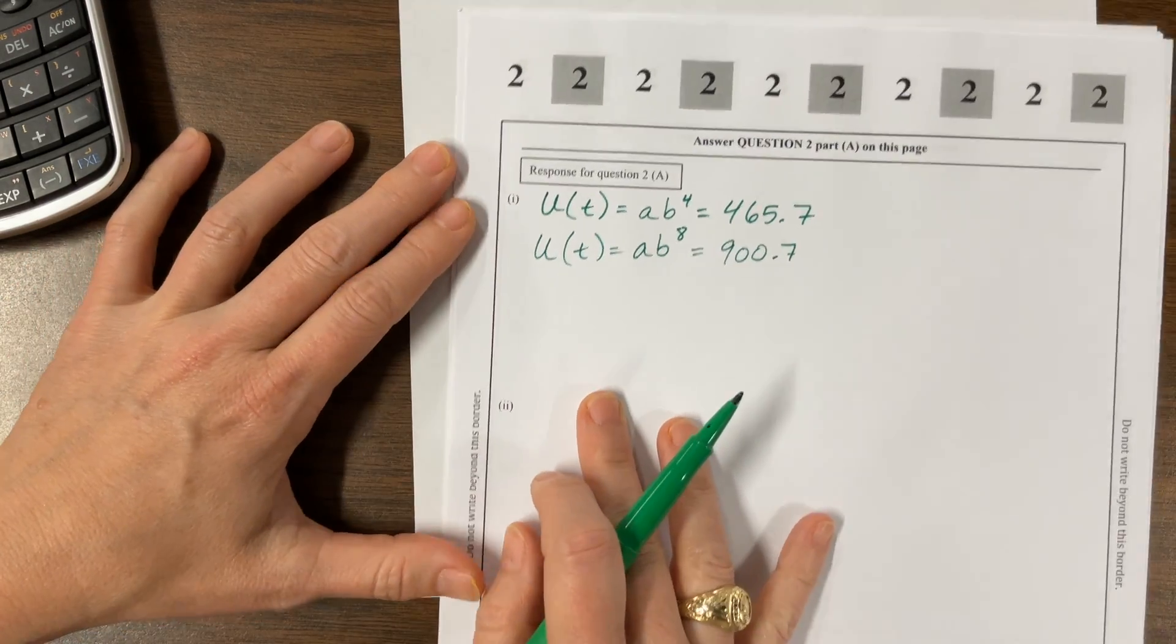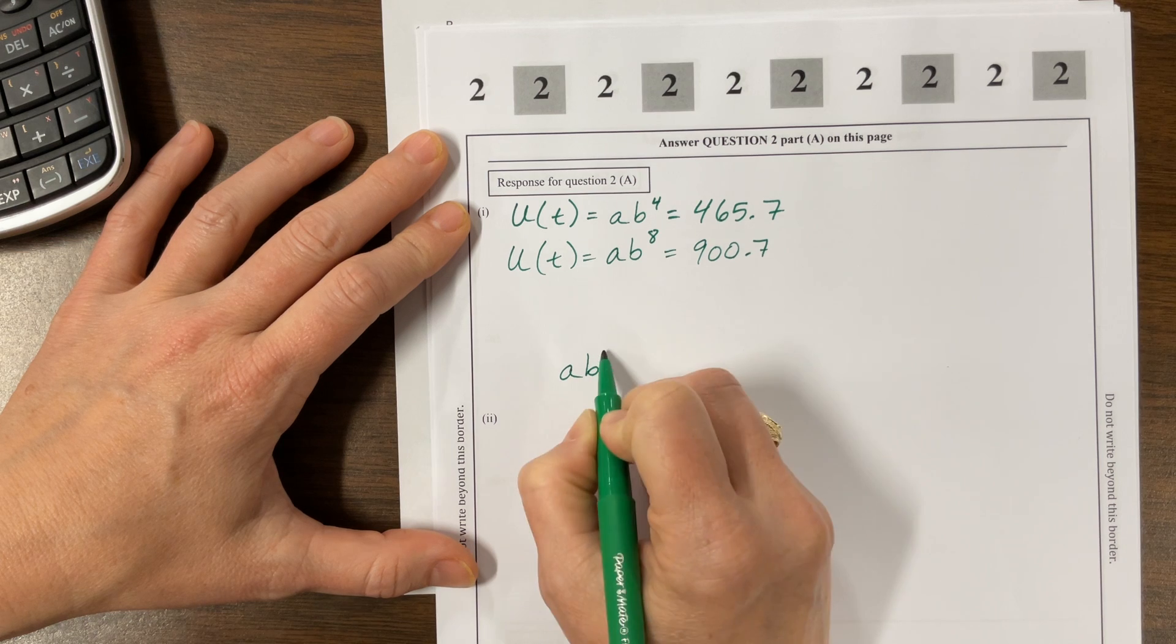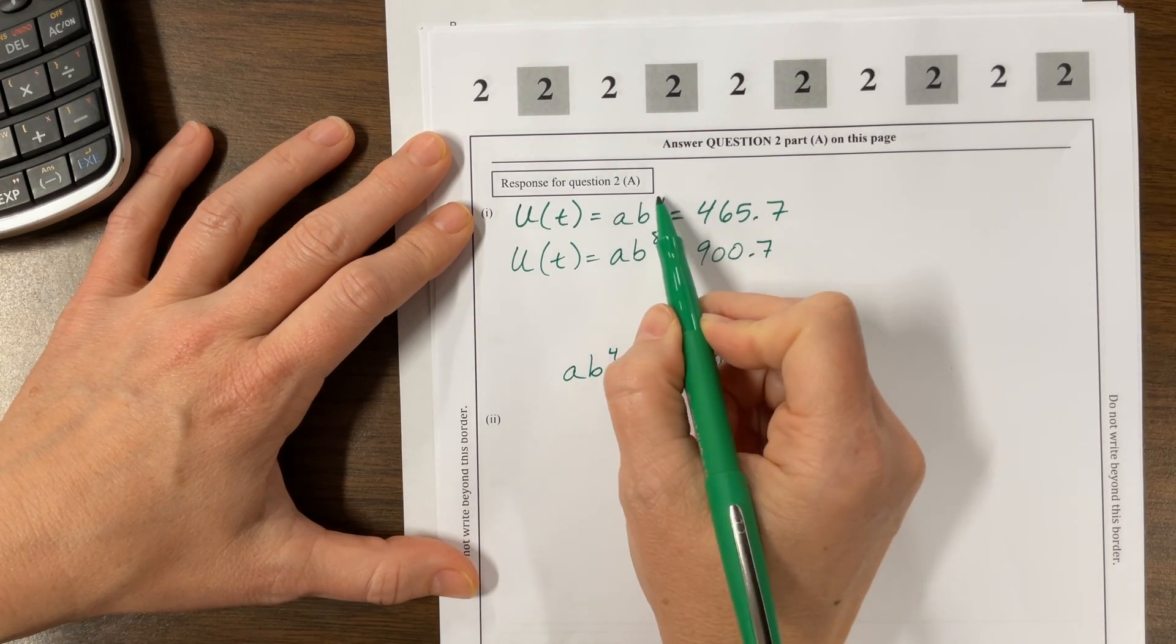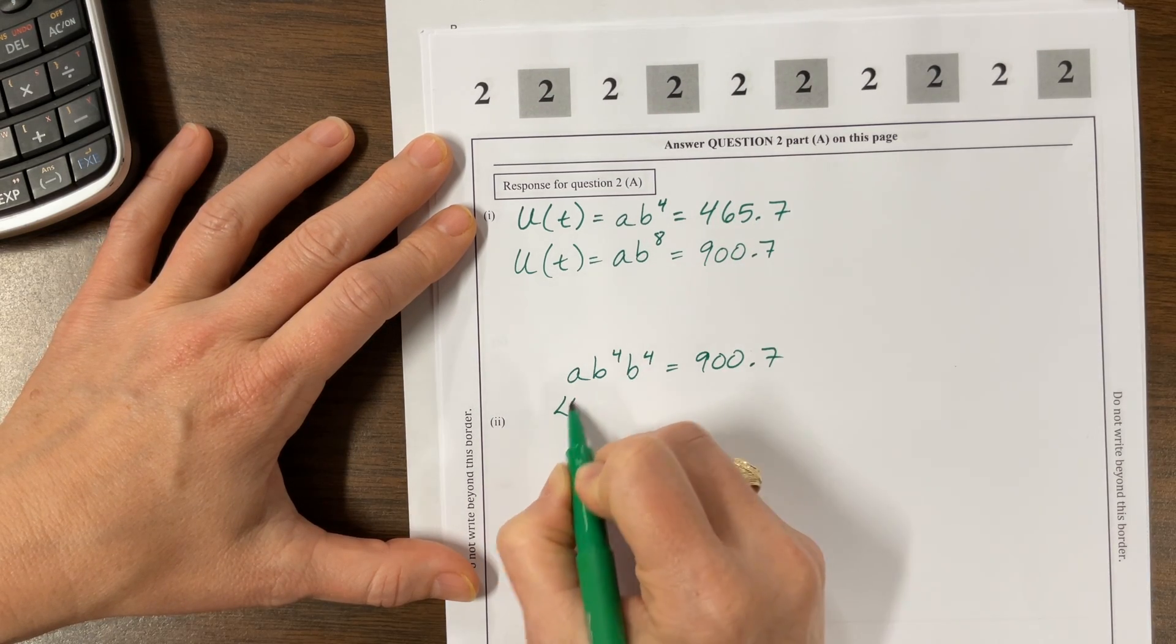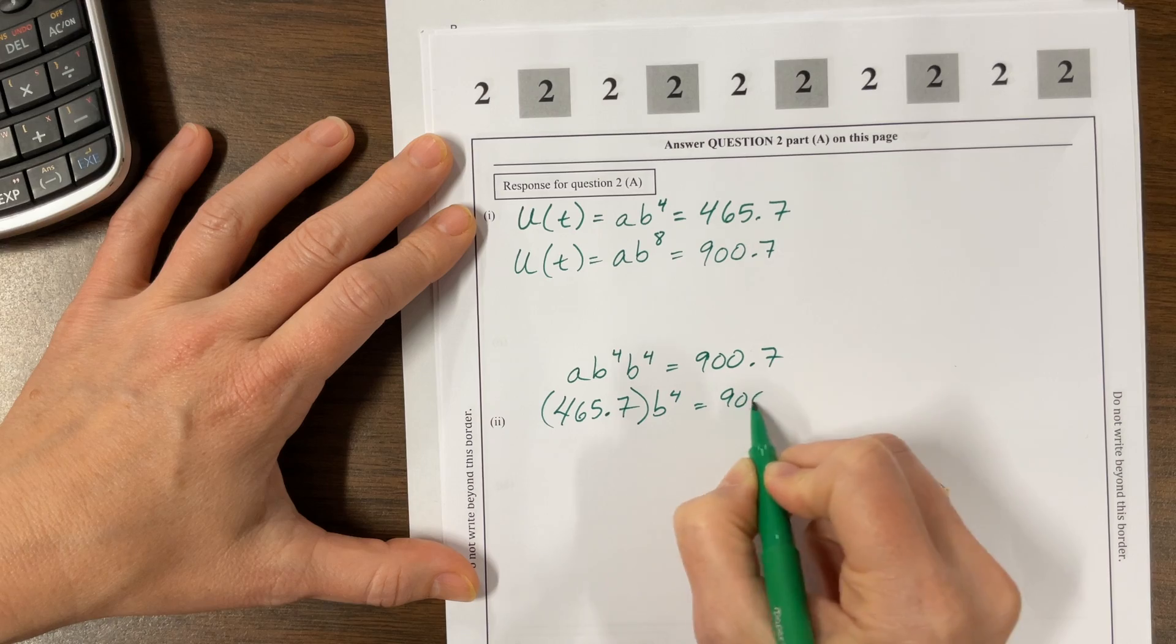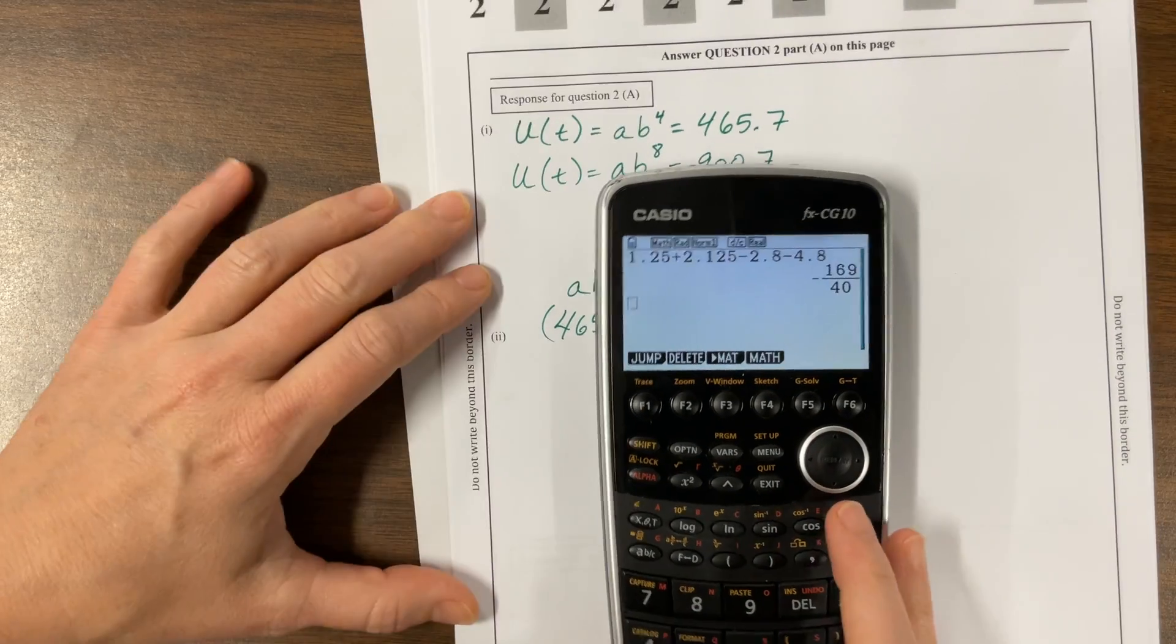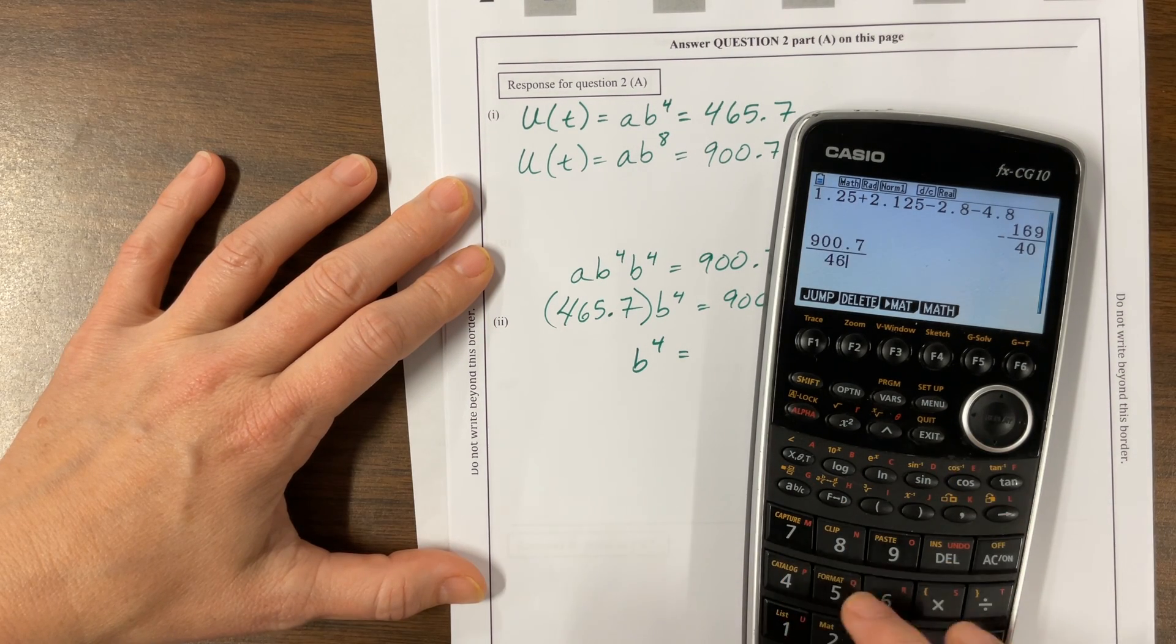Find the values for A and B. What we can do is I can recognize that this A times B to the eighth is A times B to the fourth times another B to the fourth, and this is equal to this 900.7. But I see this A times B to the fourth right here is equal to 465.7, so I'm going to substitute this in.